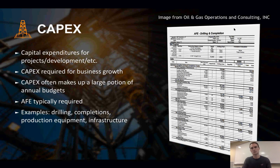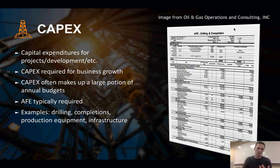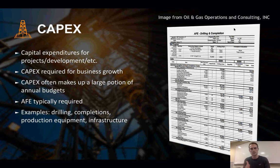CapEx is required for that, and it makes up a large portion of companies' annual budgets — something that shows up in investor relations reports. Examples of capital expenditures include your drilling costs, your completions costs, your production equipment, your facilities, and infrastructure. So everything basically required to get you to a point where you can make money off that asset — that's going to be capital expenditures.